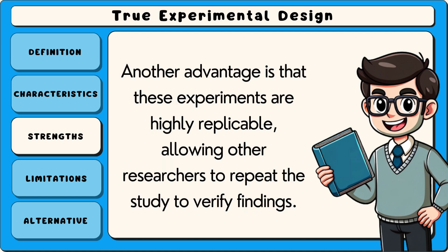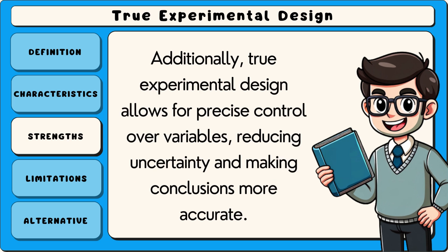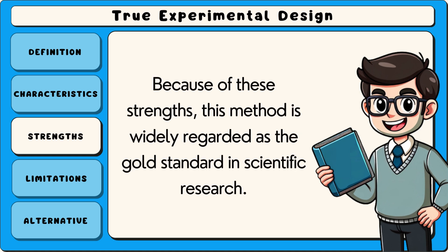Another advantage is that these experiments are highly replicable, allowing other researchers to repeat the study to verify findings. Additionally, true experimental design allows for precise control over variables, reducing uncertainty and making conclusions more accurate. Because of these strengths, this method is widely regarded as the gold standard in scientific research.